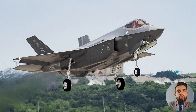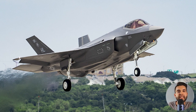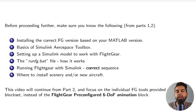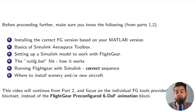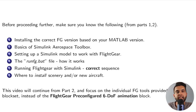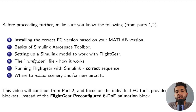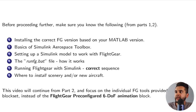Before we move on, make sure you know the following topics from Parts 1 and 2: how the Simulink toolbox works, setting up a Simulink model to work with FlightGear, the bat file run_fc.bat, how to correctly run Simulink with FlightGear — I talk about this in detail in Parts 1 and 2 — and also where to install scenery and new airplanes.